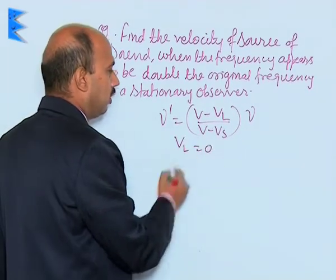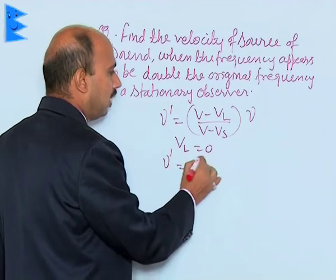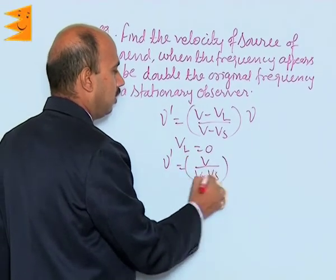Actually, V L is equal to 0, and we can write nu dash is equal to V upon V minus V s into nu.